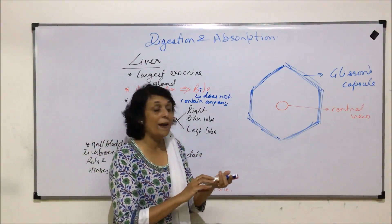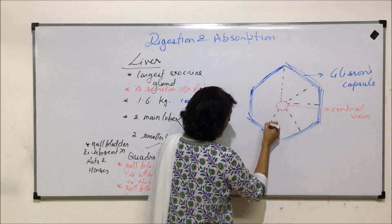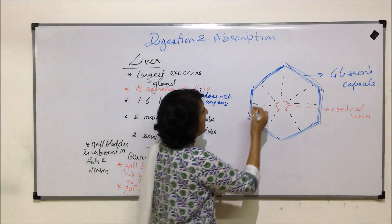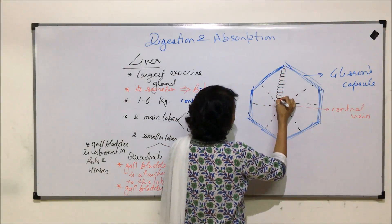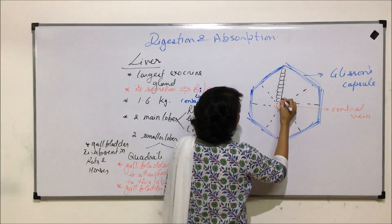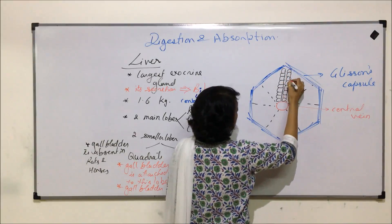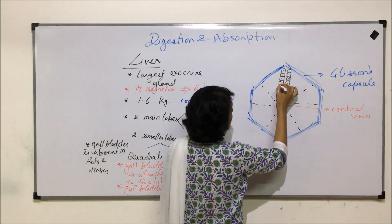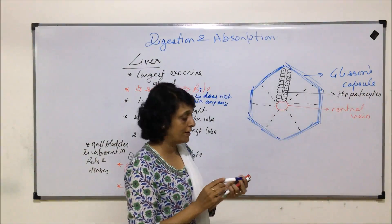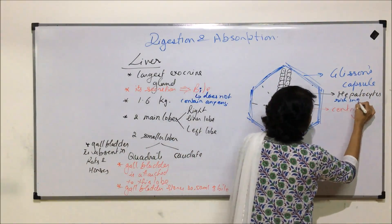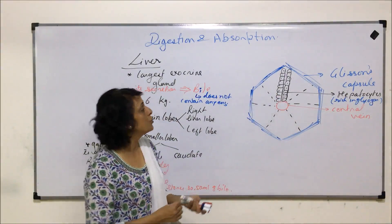Around the central vein are arranged hepatocytes, which are the actual liver cells. These hepatocytes are arranged in a plate-like structure. Hepatocytes are rich in glycogen — this is where glycogen is stored in the liver, which is why we say glycogen is stored in liver and muscles.